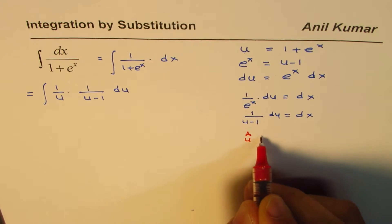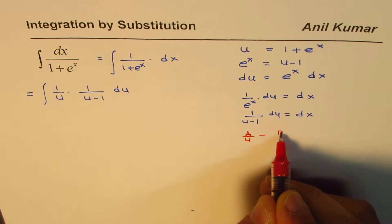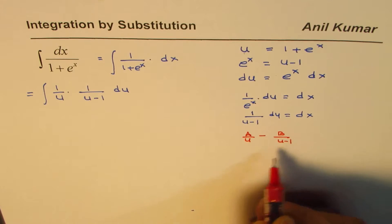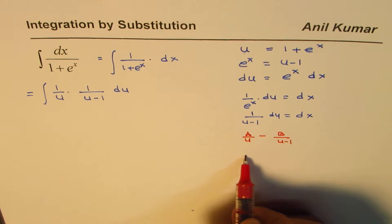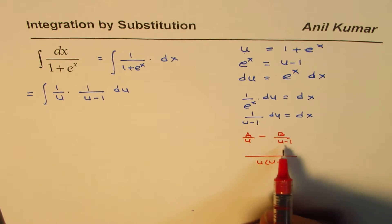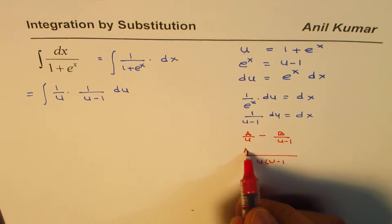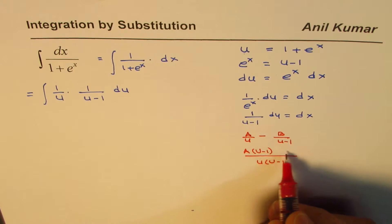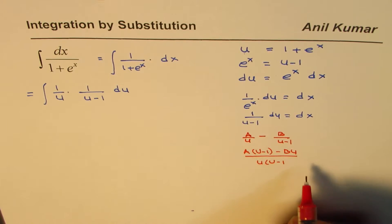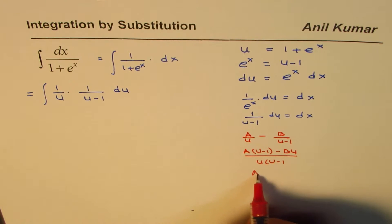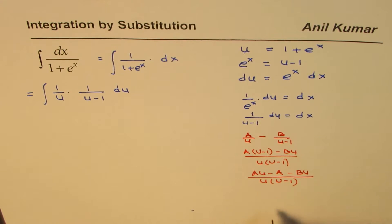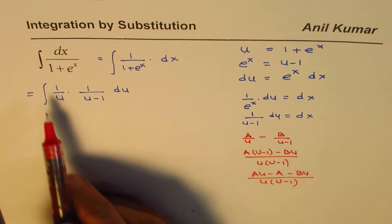So this could be written as, let us say, a over u plus b over u minus 1. So we can have a common denominator which will be u times u minus 1. So when you multiply you get a times u minus 1 plus b u over u times u minus 1.